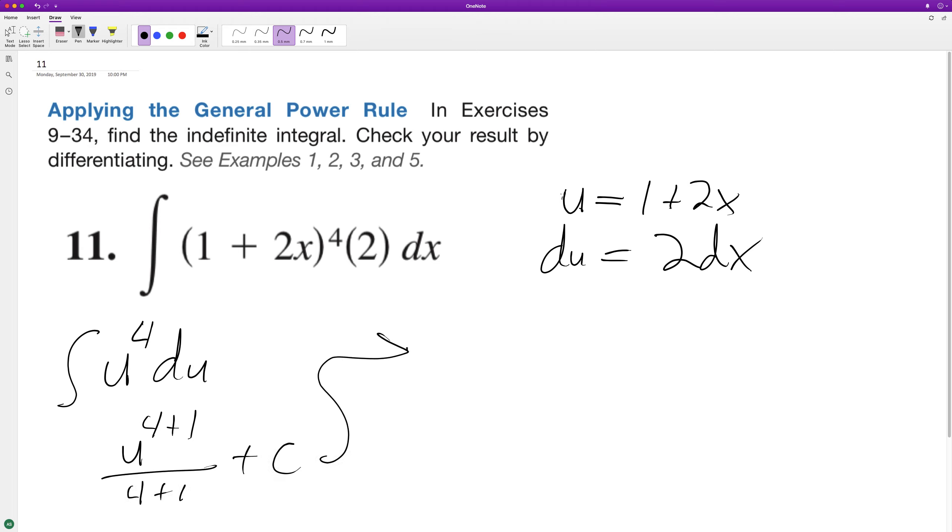Now we can substitute back in. We have u to the fifth, so we'll have (1 + 2x) raised to the fifth, and this is all over 5, plus C. So this is our indefinite integral.